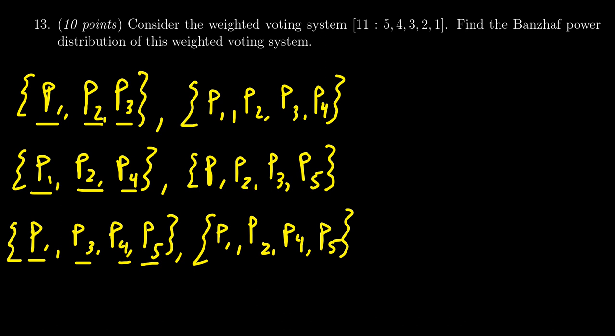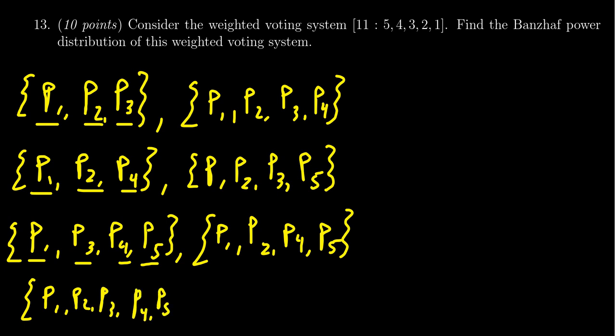And then of course you have everyone: player 1, player 2, player 3, player 4, player 5. So this gives us 7 winning coalitions in total. These are all of the winning coalitions.